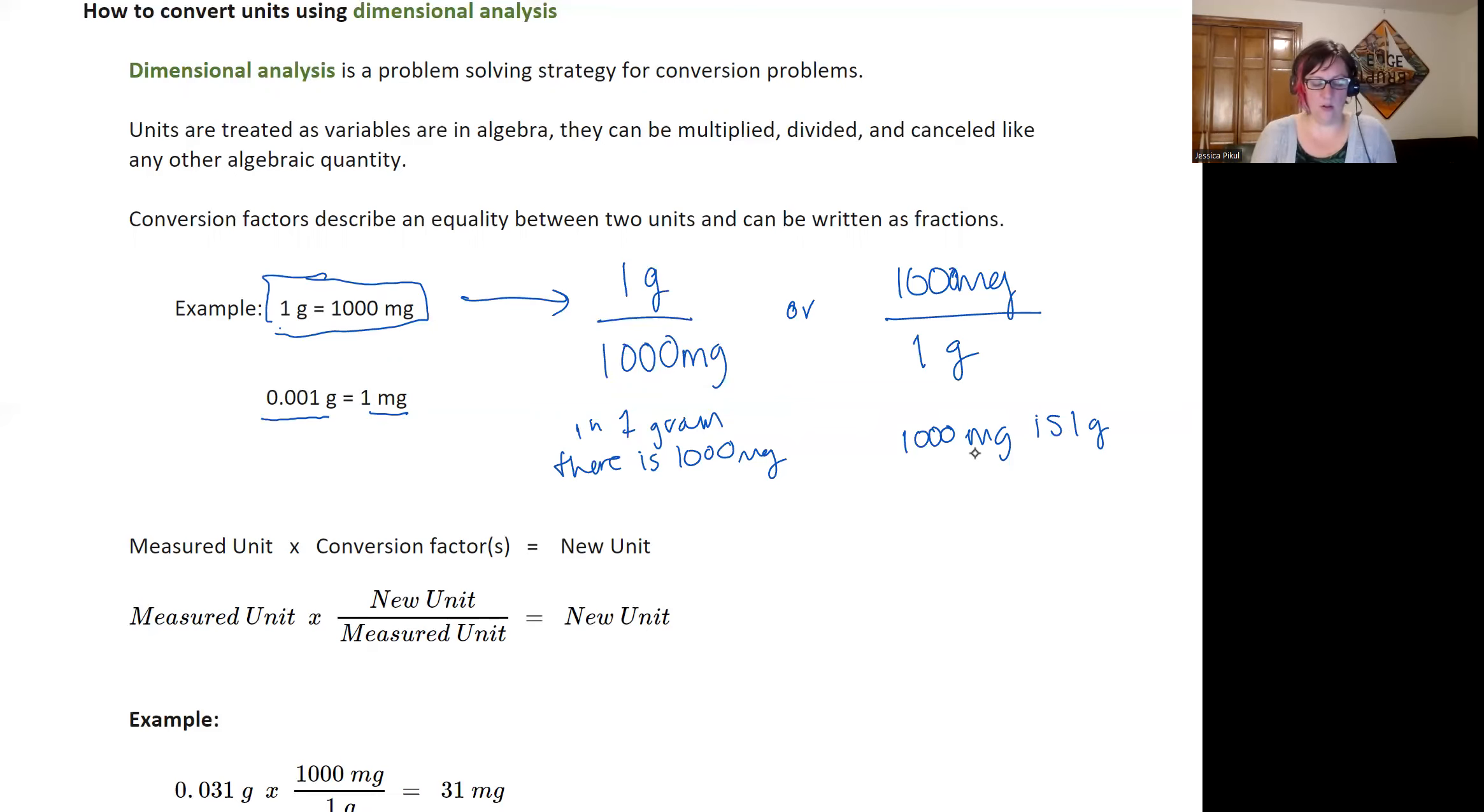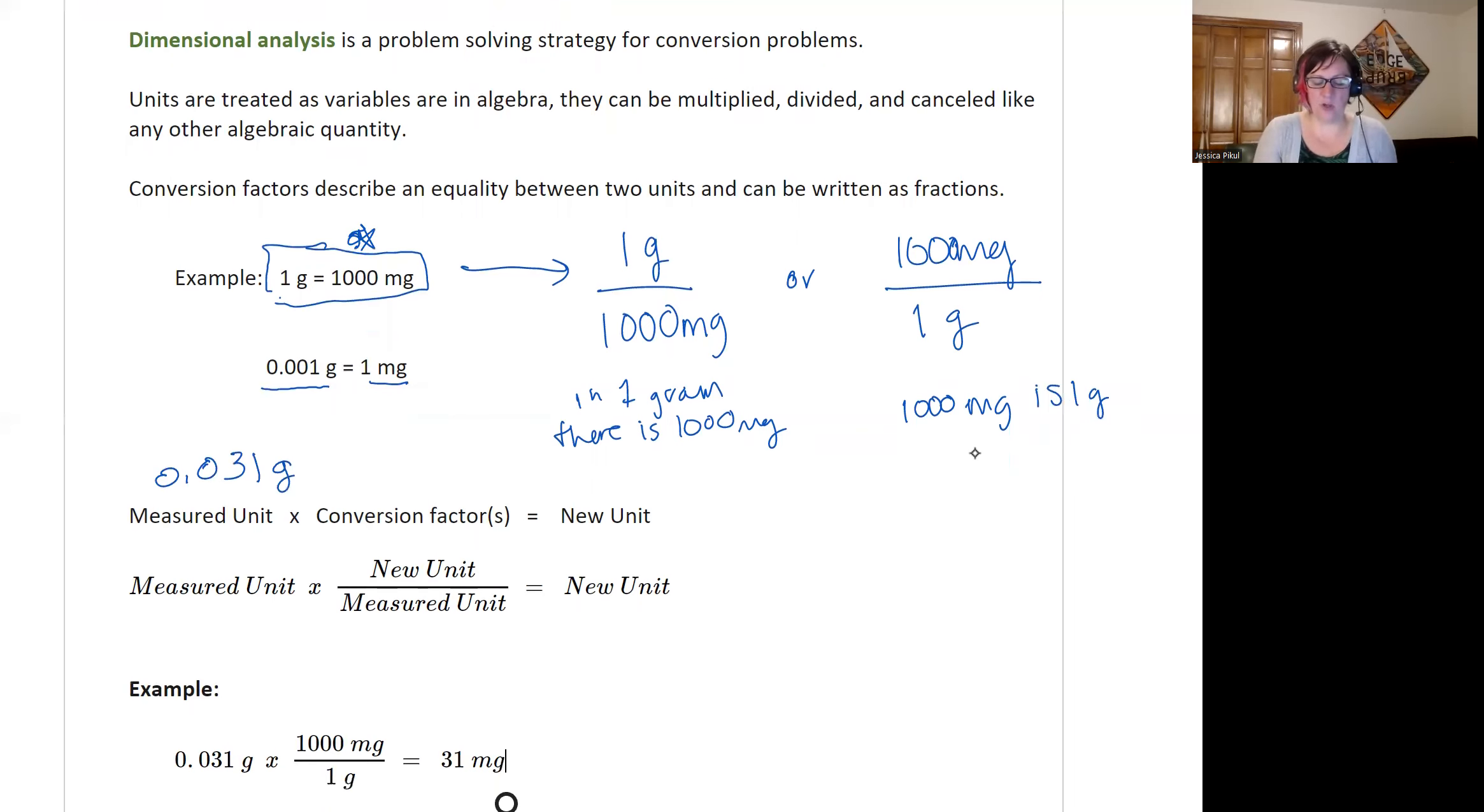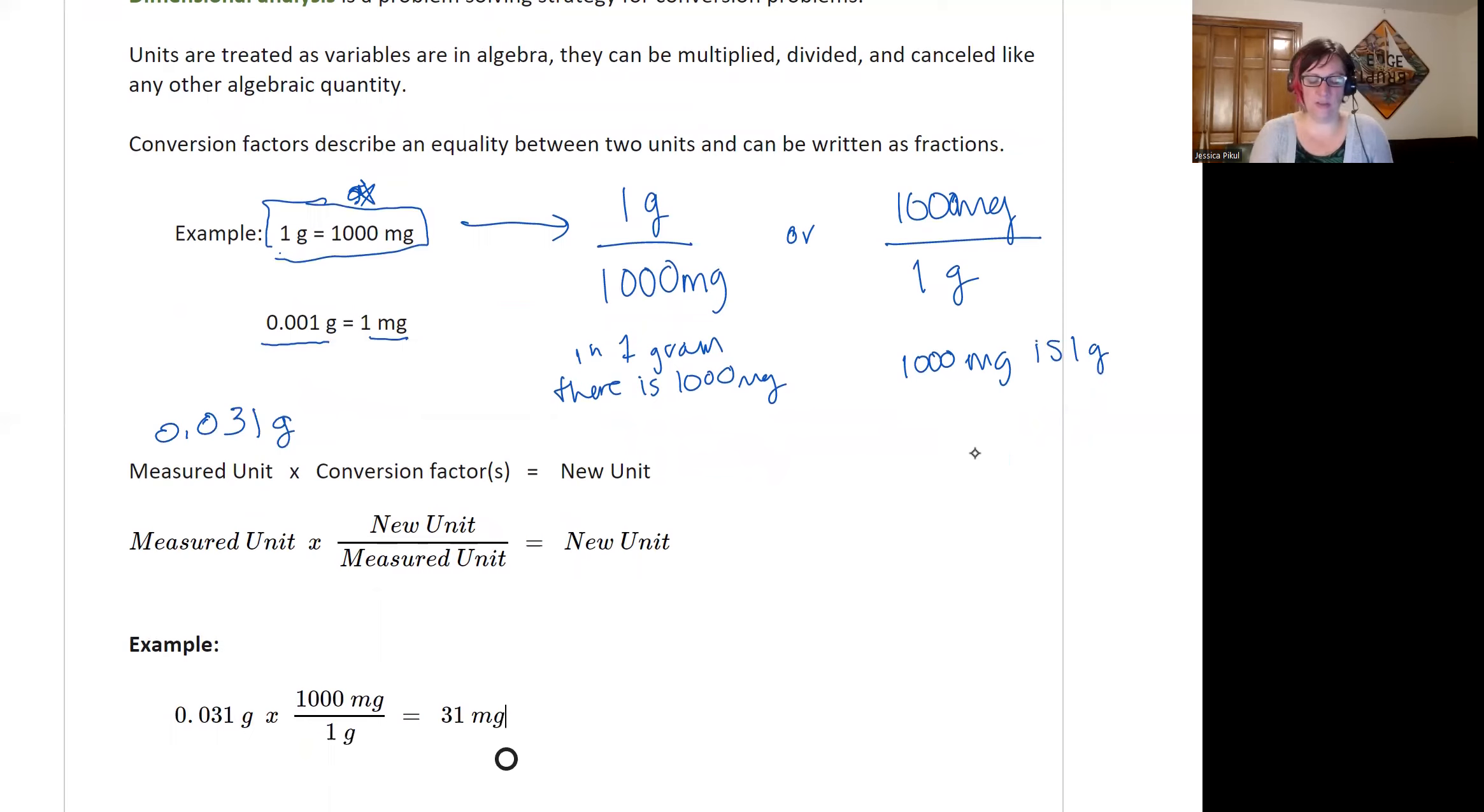And so in the case of our example, our measured unit was the 0.031 grams. Our conversion factor is the one gram equals 1000 milligrams in a fraction. And we're trying to get to a new unit of milligrams. And so we are going to choose a fraction version of our conversion factor based on the units that we're trying to calculate and the ones that we have.